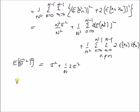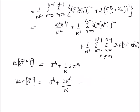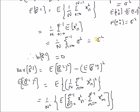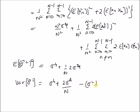So the second moment E[(sigma-hat squared)²] = sigma⁴ + 2*sigma⁴/n. The variance of sigma-hat squared equals E[(sigma-hat squared)²] minus (E[sigma-hat squared])² = sigma⁴ + 2*sigma⁴/n minus sigma⁴ (since E[sigma-hat squared] = sigma squared). These two sigma⁴ terms cancel, leaving the variance of sigma-hat squared equal to 2*sigma⁴/n. This is the variance of the estimator.